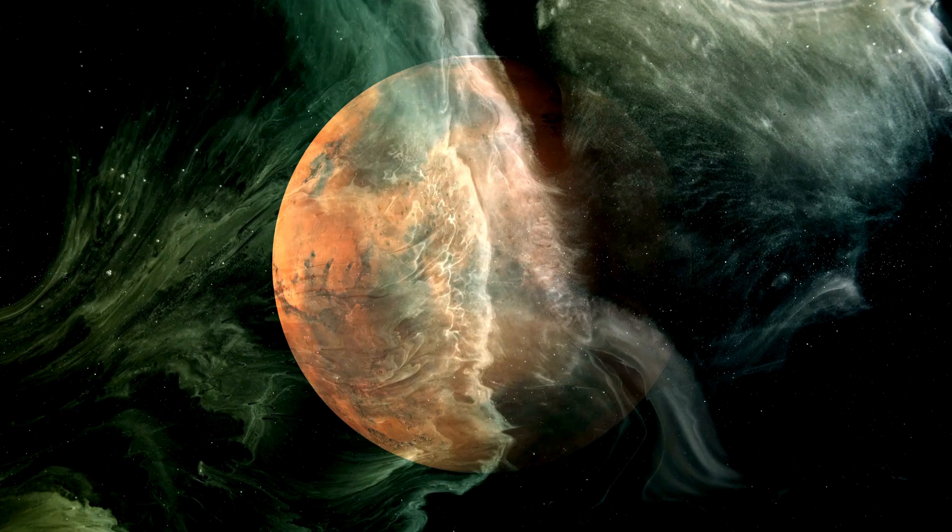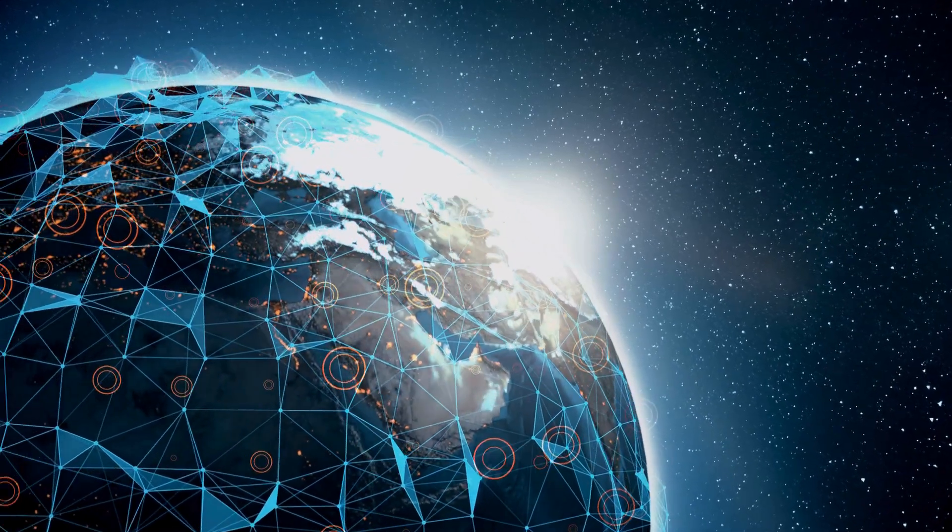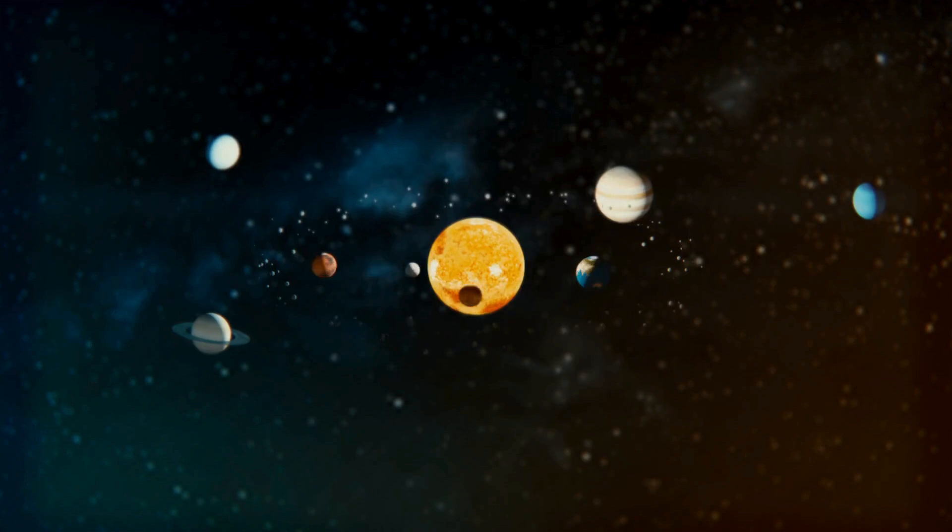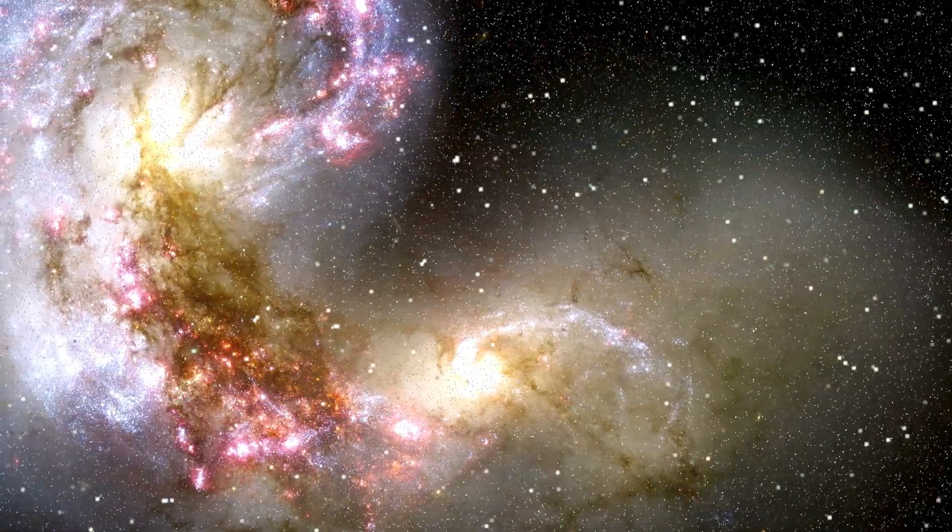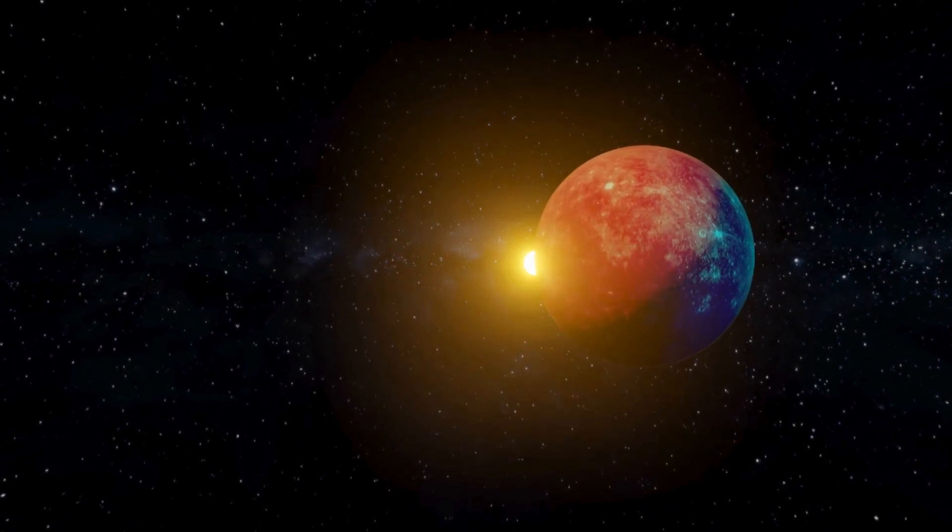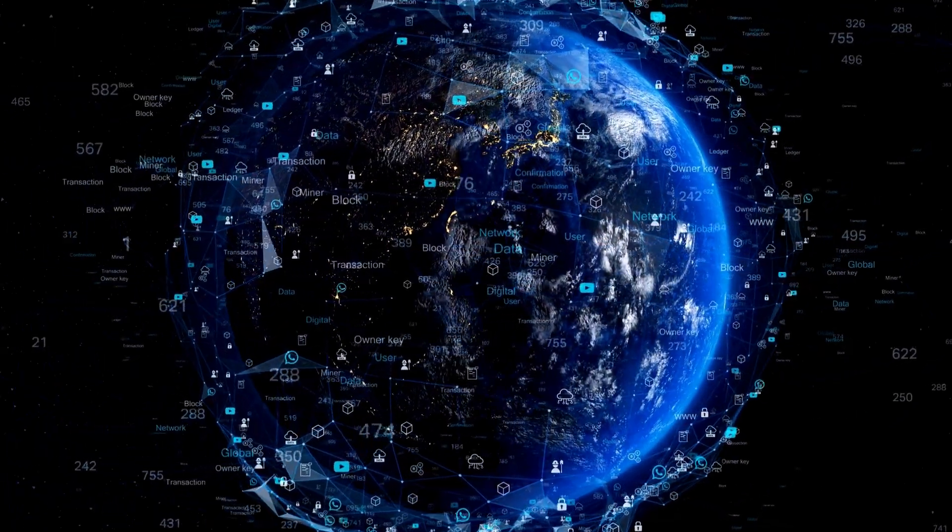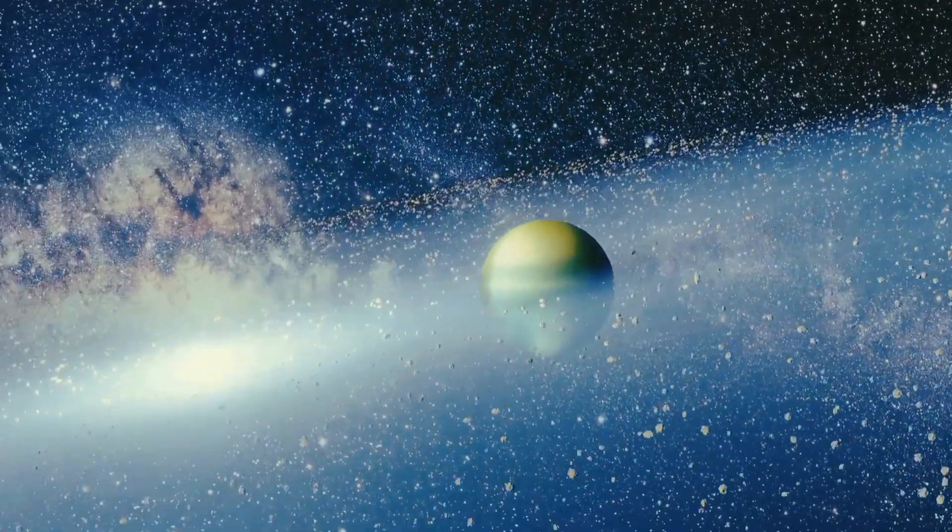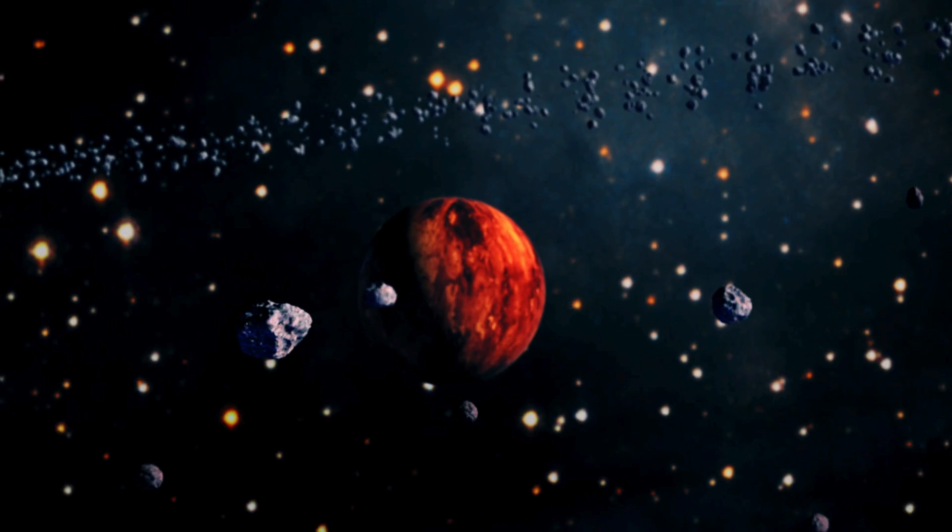Along with this, the system detected a faint but consistent infrared reflection, emanating from an area of space that had no known source. When scientists first saw the output, the system's final log read simply, anomaly identified, candidate object detected. This output wasn't an over-enhancement of noise. It was a pattern emerging from the data, a pattern that aligns with theoretical predictions for what Planet Nine could look like. With a mass estimated to be between five and ten times that of Earth, and an orbit that takes tens of thousands of years, this object could be a key piece in explaining the unusual orbits observed in the far reaches of our solar system.